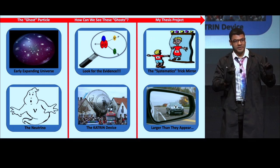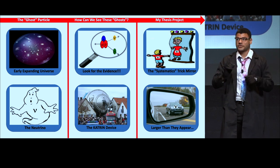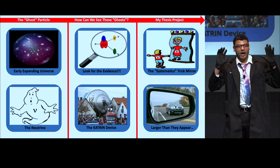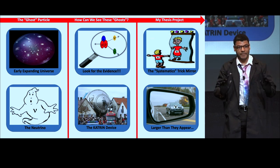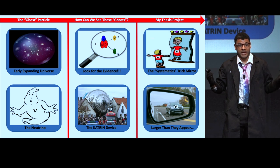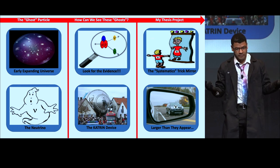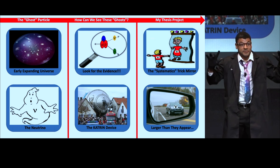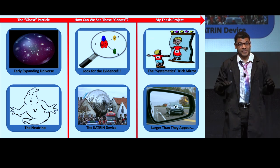However, measuring and detecting neutrinos is not that easy. Allow me to demonstrate. In that second, about 100 billion neutrinos just passed through my finger — 100 billion particles passing through my finger in a mere second, and yet my finger is completely unharmed. Sounds crazy, no?